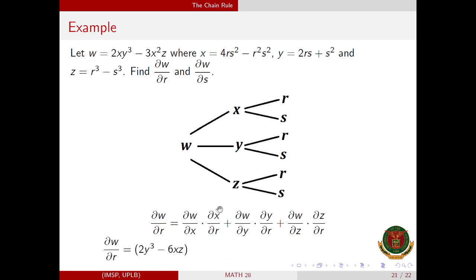For the partial derivative of w with respect to x: from 2xy cubed we get 2y cubed, and from negative 3x squared z we get negative 6xz. For the partial derivative of x with respect to r: from 4rs squared we get 4s squared, and from negative r squared s squared we get negative 2rs squared.